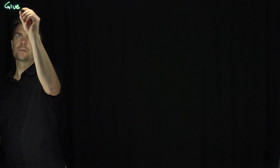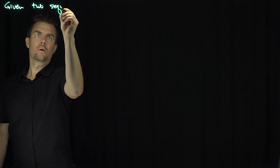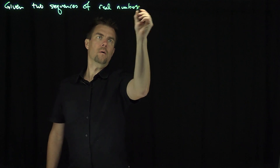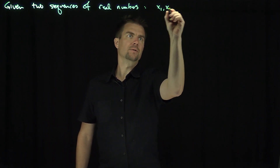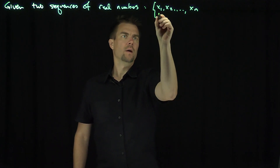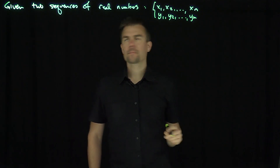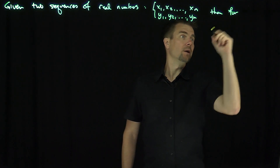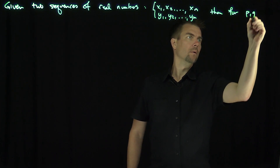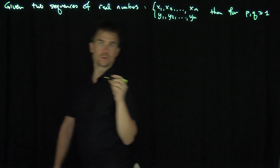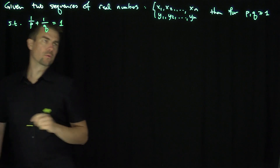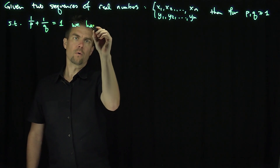Hello students. In this video we'll prove Hölder's inequality. If we're given two sequences of real numbers x₁, x₂, up to xₙ, and y₁, y₂, up to yₙ, then for p and q greater than or equal to 1, such that 1/p plus 1/q equals 1, we have Hölder's inequality.